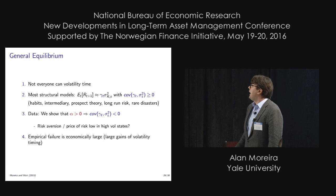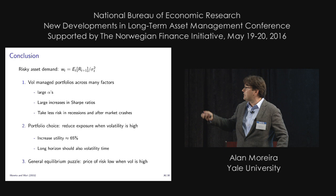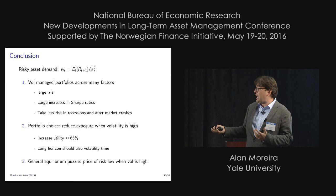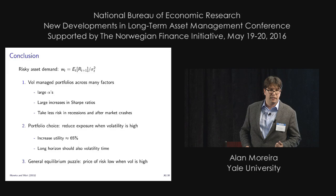In conclusion, we show very large alphas for this very simple strategy, and this has very big gains in utility. Not everybody can volatility trade, so we skip the general equilibrium section. The conclusion is: we show very large alphas for this very simple strategy with very big gains in utility. And as I didn't discuss in detail, this poses a general equilibrium puzzle in the sense that the price of risk is low when volatility is high.